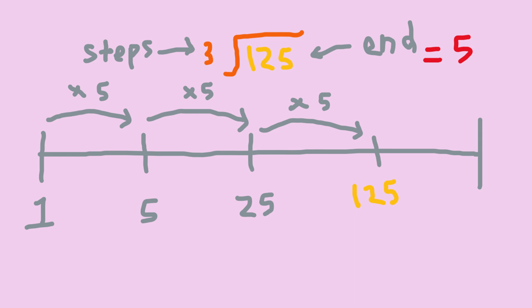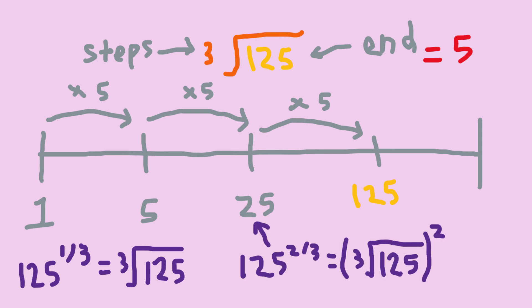5 is also like going one third of the way to 125. This is why 125 to the one third power is the same as the cube root of 125. 125 to the two thirds is just two thirds of the way, which is also the cube root of 125 all squared. But I prefer writing it with an exponent, since it's more descriptive, telling me exactly what it represents.